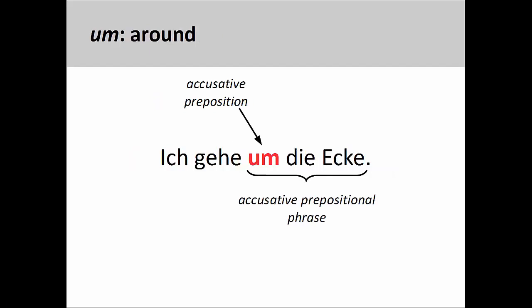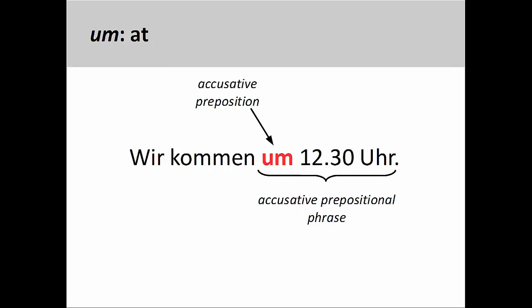Finally, the preposition um can mean 'around' a physical object, such as 'Ich gehe um die Ecke' — I am going around the corner. Or in time expressions, um can mean 'at' a specific point in time, such as 'Wir kommen um zwölf Uhr dreißig' — we are coming at 12:30 p.m.